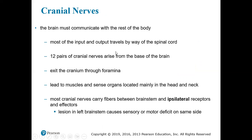Now, cranial nerves. The brain must communicate with the rest of the body. Most of the input and output will travel by way of the spinal cord. The 12 pairs of cranial nerves come from the base of the brain and exit the cranium through foramina. They mostly lead to structures in the head and neck, except for the vagus nerve. Most cranial nerves carry fibers between the brain stem and ipsilateral receptors and effectors.